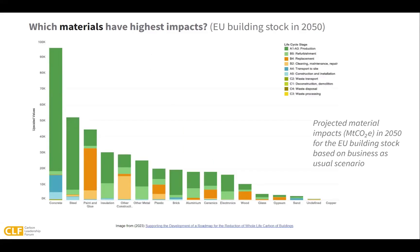Here's a separate study modeling the entire European building stock impacts in 2050 based on a business-as-usual construction scenario. Once again, we see concrete and steel at the top of the list. But since this study included the impacts of renovation projects as well, we can see things like paint and insulation used during renovations adding up to very high impacts across the entire European building stock. The message here is that while it's important to focus on reducing concrete and steel impacts, conducting whole building lifecycle assessments is an important step to both understanding and reducing building-scale impacts.